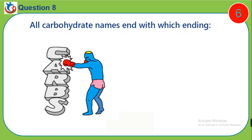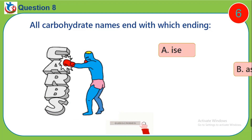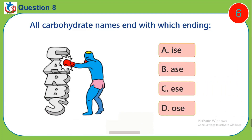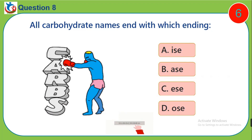Question 8. How do carbohydrate names end? A. -ISE. B. -ASE. C. -ESE. D. -OSE.